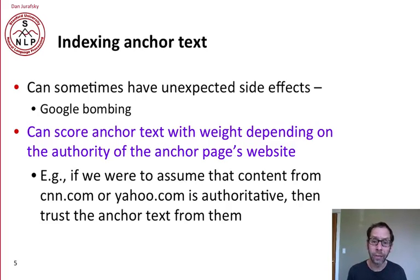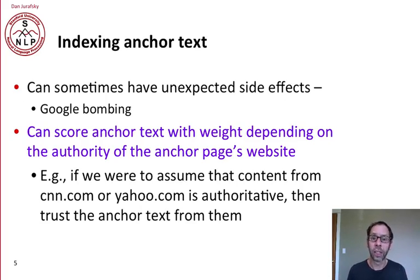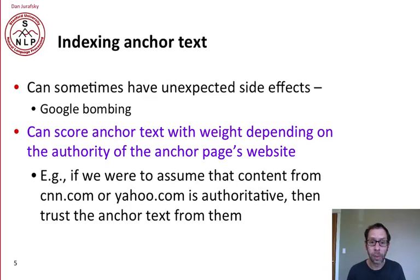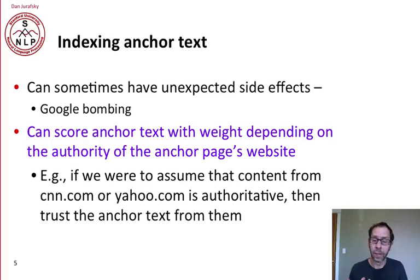Indexing anchor text can have side effects. There's the phenomenon of Google bombing, where outside people create a lot of links pointing to a page and the links have anchor text suggesting the page is about something else. We can solve some of these problems by scoring the anchor text with a weight that depends on the authority of the anchor page's website. So if a page pointing to another page is from cnn.com or yahoo.com and we decide it's authoritative, then we can trust the anchor text from it.